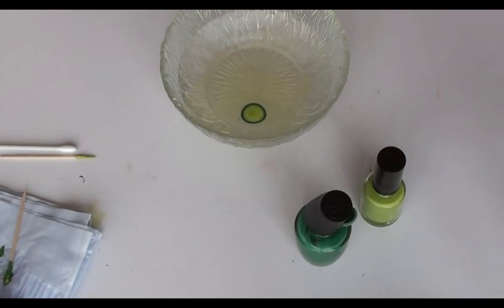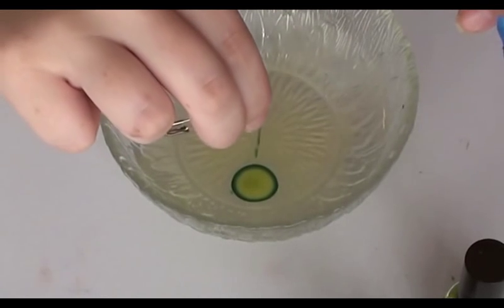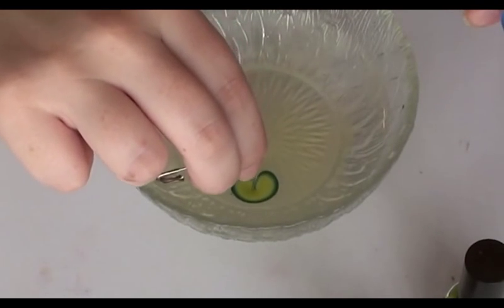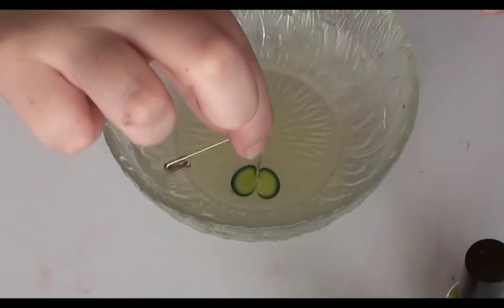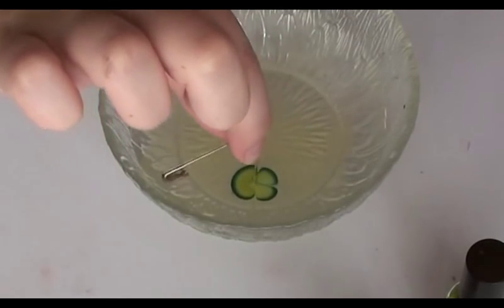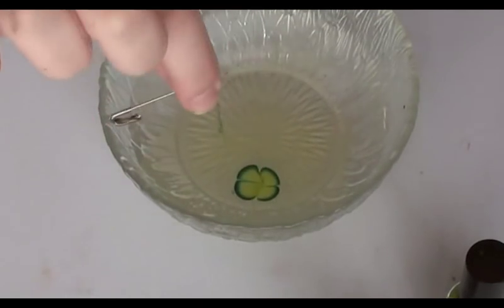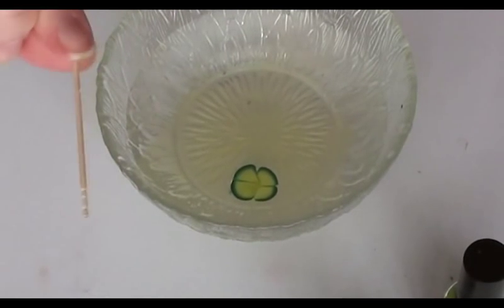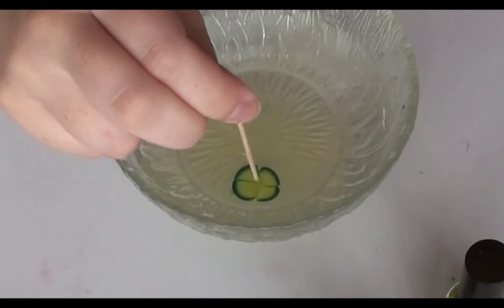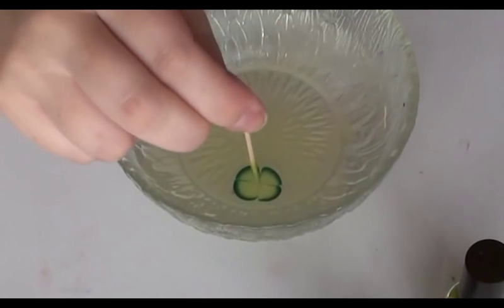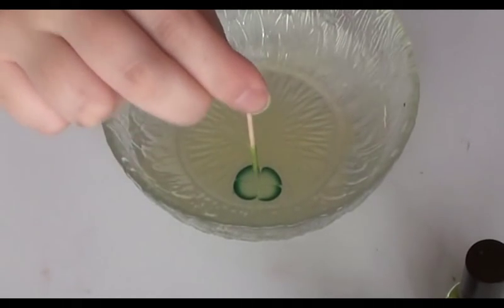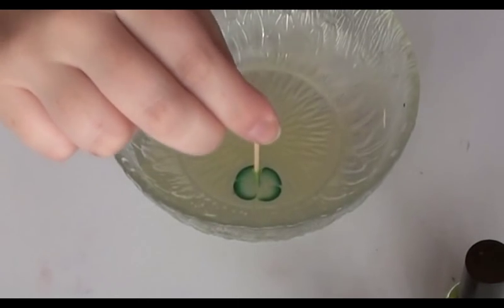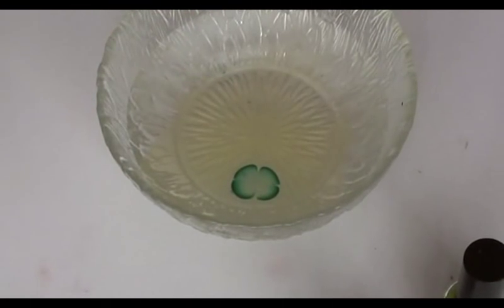Now you're going to want to get your safety pin or your needle. Dunk it down into the light green and pull it across from both sides just like that to form what looks like a four leaf clover. Getting the end of the toothpick, dunk it down in the middle which will pull the color closer together until it forms a four leaf clover.